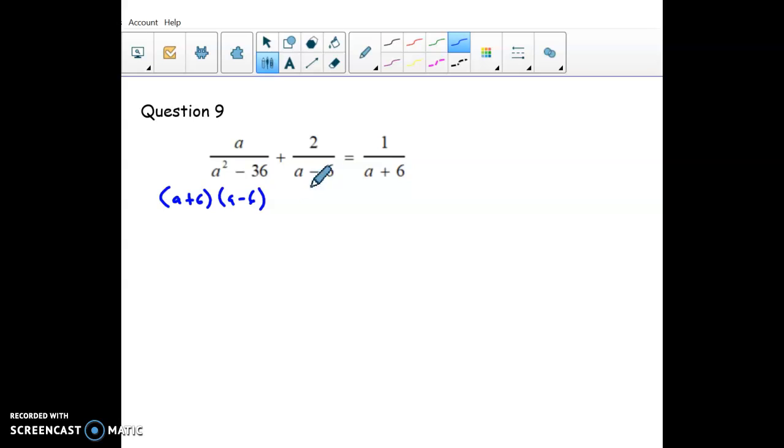oh, I almost have a common denominator. All I need to do is take this middle one times a plus 6, and then this one on the side here, on the right-hand side, times a minus 6 on top and bottom. So this one's going to get an a plus 6 up here too. And so that's kind of a giant mess here. I'll clean it up.